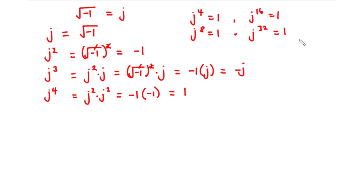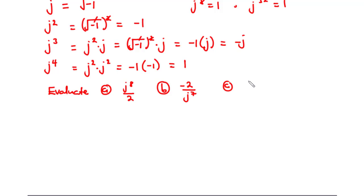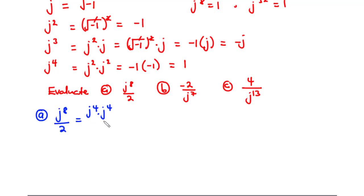Let's try some examples — evaluate: (a) j to the power 8 divided by 2, (b) negative 2 over j to the power 7, and (c) 4 over j to the power 13. For part (a), j to the power 8 can be expressed as j to the power 4 times j to the power 4. Since j to the power 4 equals 1, we have 1 times 1 divided by 2, which equals one half.